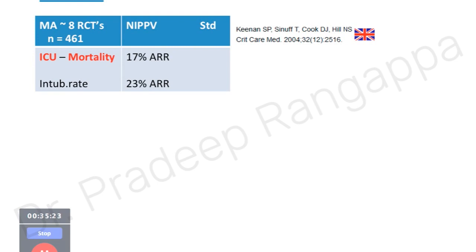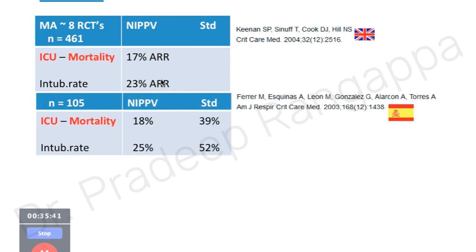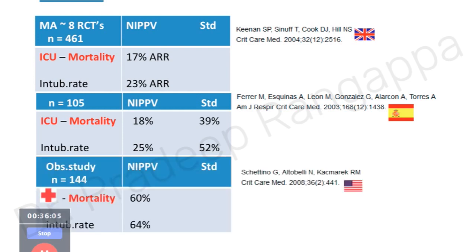In hypoxic respiratory failure due to pneumonia or infection, a UK meta-analysis of eight randomized controlled trials with 461 patients showed a 17% absolute risk reduction in ICU mortality and a 23% absolute risk reduction in intubation rate with NIV compared to standard. A Spanish study of 105 patients with pneumonia and hypoxic respiratory failure found ICU mortality of 18% versus 39%, and lower intubation rates with NIV.